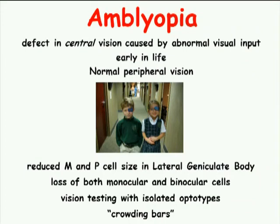Amblyopia is a defect in central vision that is caused by abnormal visual input early in life. Amblyopic patients have normal peripheral vision. This is caused by the reduced M and P cell size in the lateral geniculate body, and denotes a loss of both monocular and binocular cells.